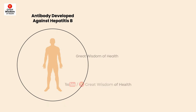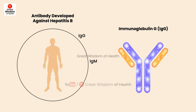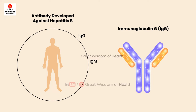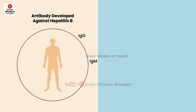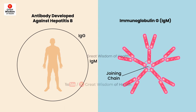Immunoglobulin G is the most common antibody. It is found in blood and other body fluids and protects against bacterial and viral infections. It can take time to form after an infection or immunization. Immunoglobulin M is found mainly in blood and lymph fluid. This is the first antibody the body makes when it fights against a new infection.